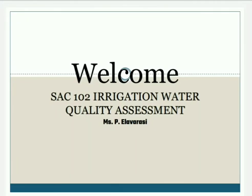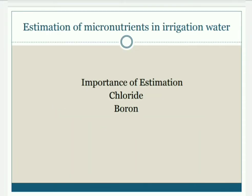Welcome to Irrigation Water Quality Assessment. Today we are going to study about micronutrients in irrigation water. The word micronutrient represents essential nutrients required in very small quantities, also called as trace elements.